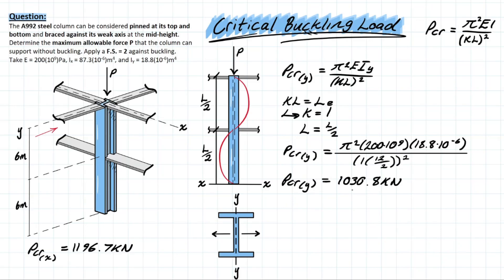We're going to be taking this value as our critical buckling load, but before we solve this as our final answer, we need to divide it by our factor of safety, which is given in this problem as 2, leaving us with a final value for the critical buckling load altogether of 515.4 kilonewtons. That's it!